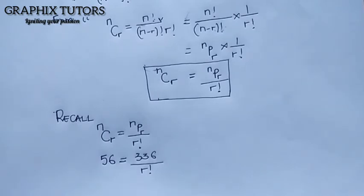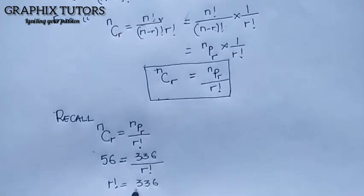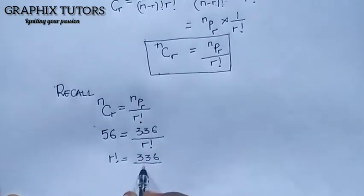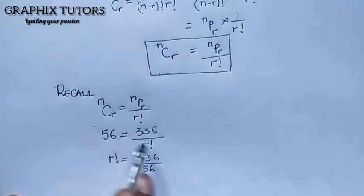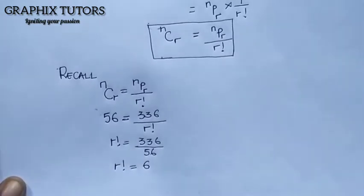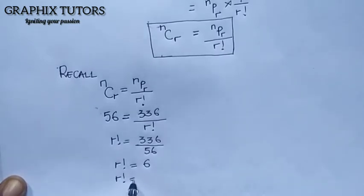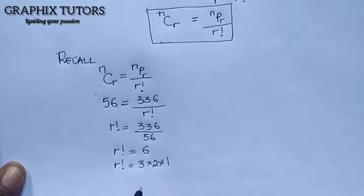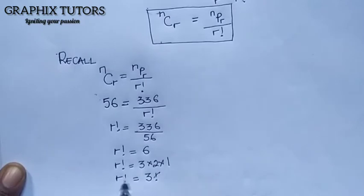So from here, if I take R factorial across, R factorial equals 336 over 56, which gives us 6. Now 6 can also be written as 3 times 2 times 1, which is 3 factorial. So factorial equals factorial, meaning R is equal to 3.